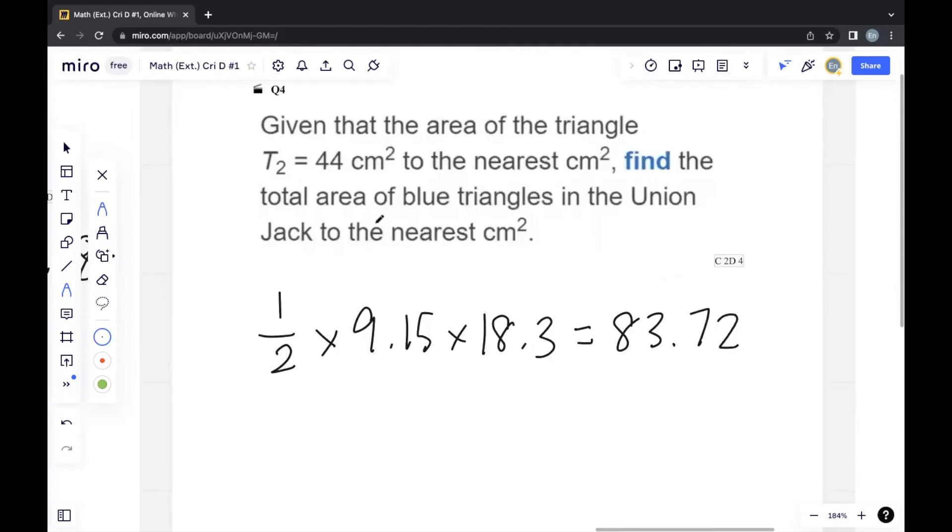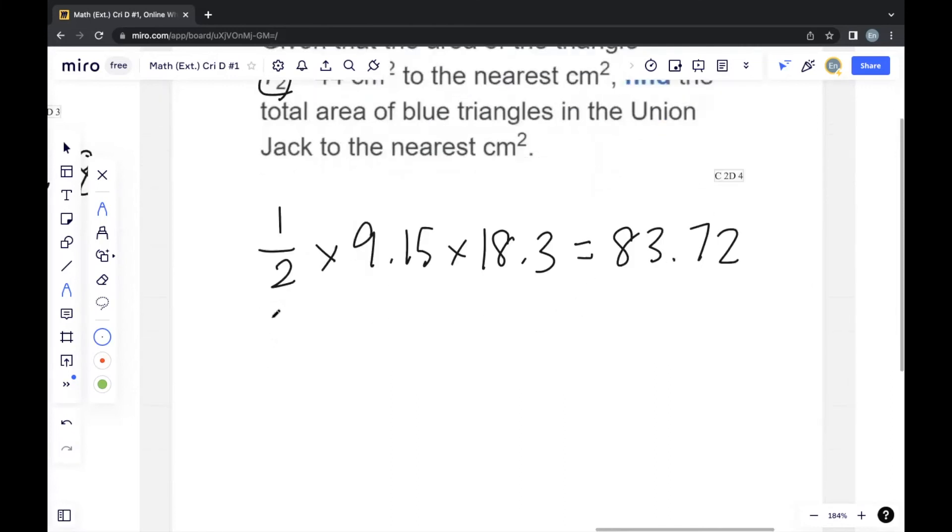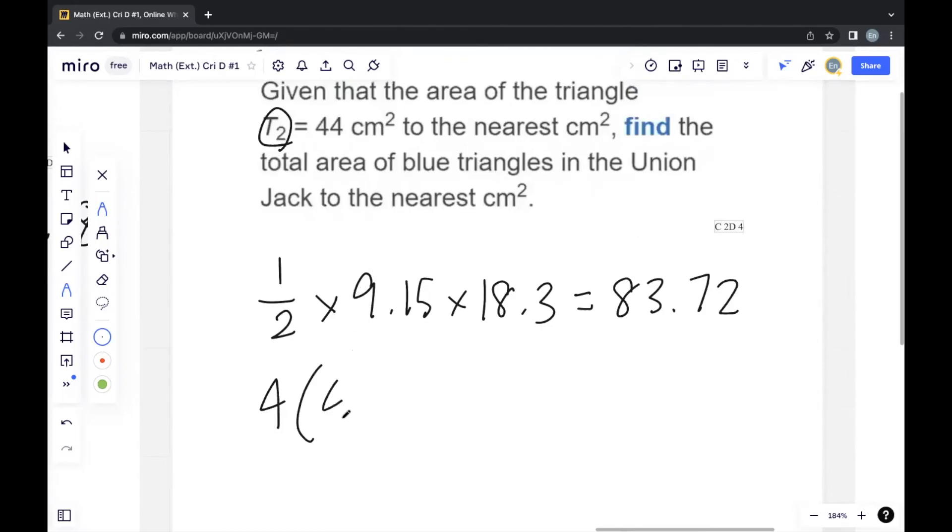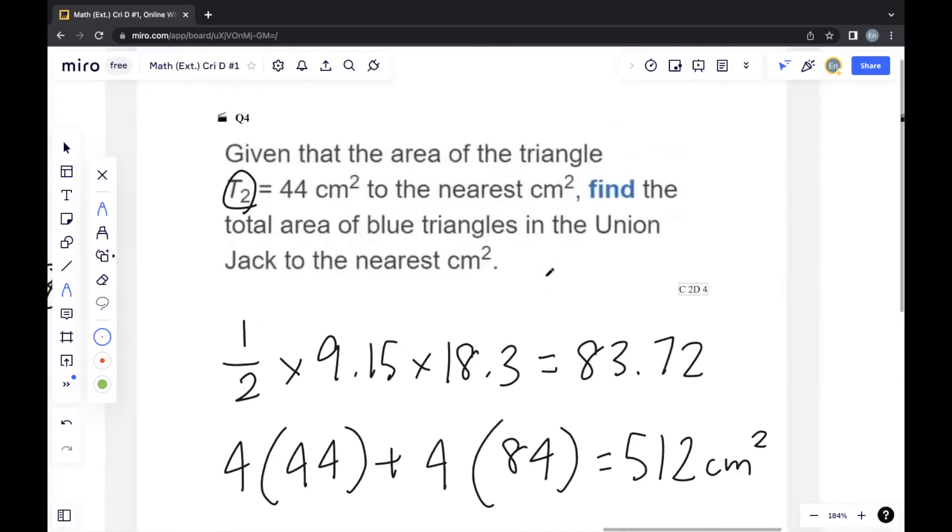As previously mentioned, there are 4 blue triangles with the same area as T2, and 4 with the same area as T1. So we multiply 4 by 44, and add 4 times 84, giving us 512 cm². This is the total area of blue triangles in the Union Jack.